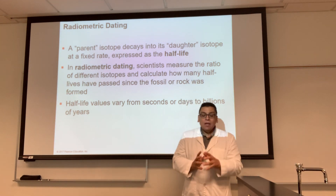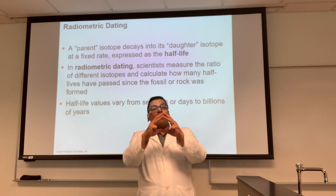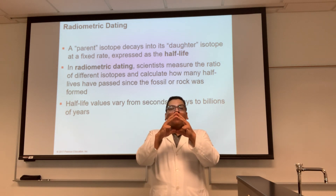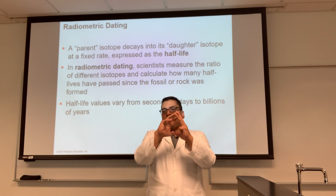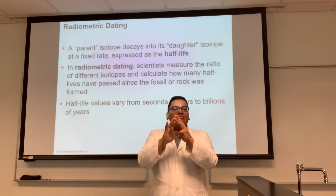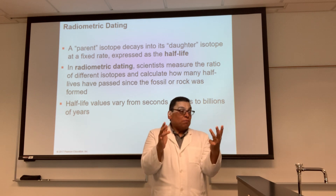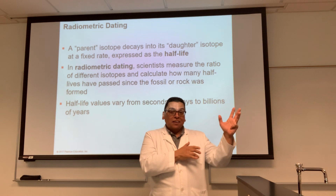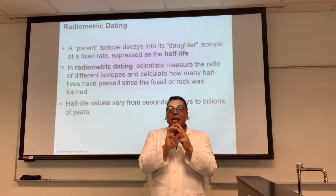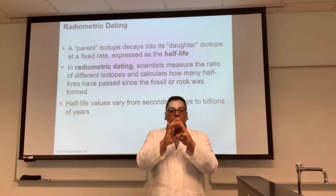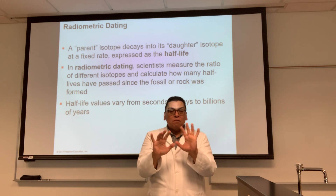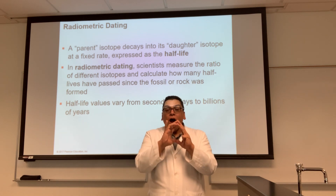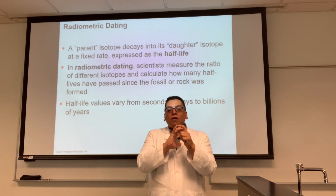An ion can also sometimes gain an electron. What charge will it be? Negative. Gaining usually means plus in math and accounting, but not here — because what you're gaining is a negatively charged electron, that's why you're negatively charged. Negative versus positive has nothing to do with math in this case; it has to do with the charge associated with whatever it is that you're gaining or losing.